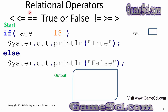Some of these might be new. The equal-equal operator says if both sides are the same, return true. The not-equal operator, if the two operands are different, return true. We'll see how they work by tracing the code. All relational operators return true or false, and they are excellent for use in an if-else statement.